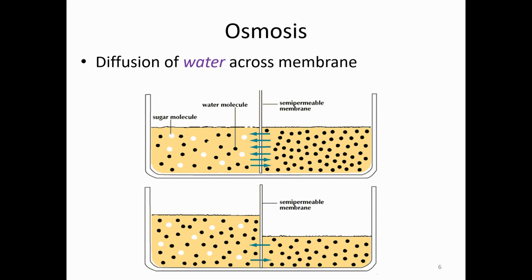The sugar cannot move, so we don't see any sugar going from the left to the right — it cannot cross through that membrane. The trend is that more water will move to the left from the right, with some still moving from left to right, just not as much, until we reach equilibrium.